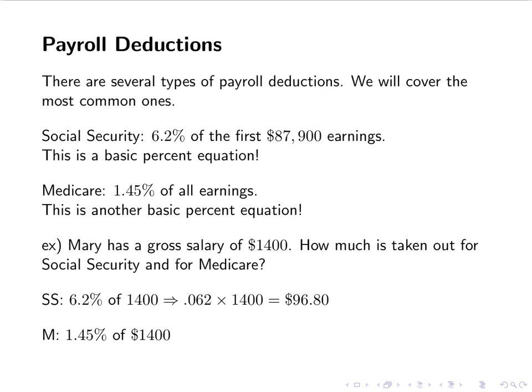For Medicare, it's 1.45% of $1,400. So it's .0145 times $1,400. This is a very small amount. The biggest mistake I'll see is people doing 14.5% instead. So 1.45% is .0145, and we multiply it by $1,400, which gives us $20.30.